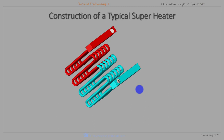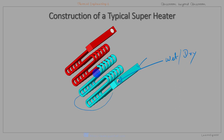This is a typical superheater with two headers. One header receives the wet or dry steam through the anti-priming pipe, and steam passes to the other header through a series of tubes. The superheated steam leaves the header and enters the turbine through the steam stop valve.